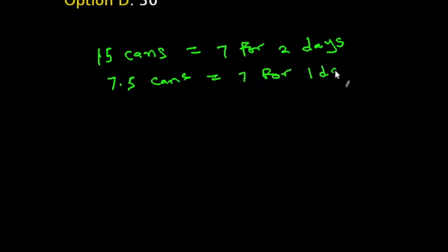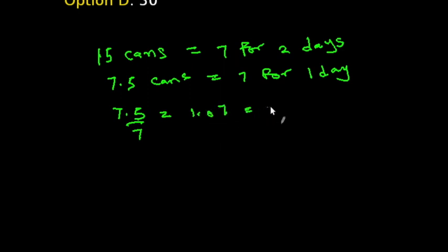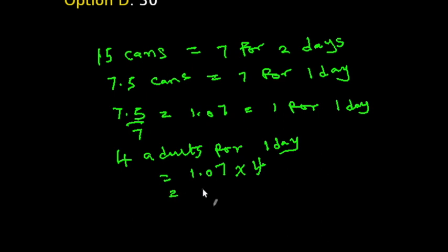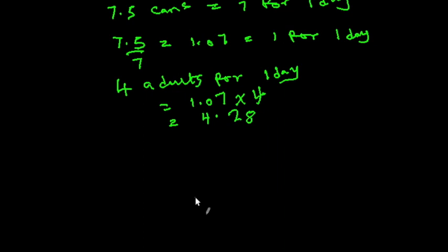We also need to find how many cans feed one adult for one day. We divide 7.5 by 7, which equals approximately 1.07 cans per adult per day. Next, we find how many cans feed four adults for one day: 1.07 times 4 gives us 4.28 cans for four adults for one day.